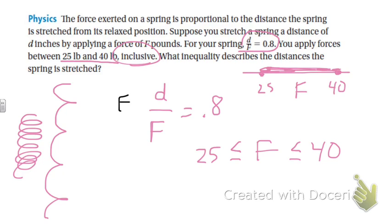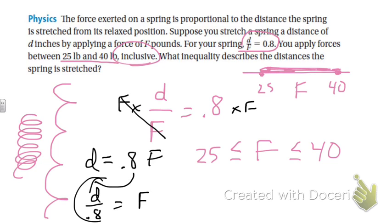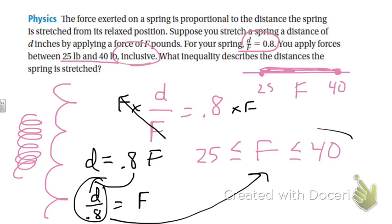You can multiply both sides by f, and you have d equals 0.8f, and then divide by 0.8, and that would give you f in terms of d, because we need to find the distances. So this actually to finish solving it would go here, but I think if you're understanding that right now, that's enough. Okay, we'll keep going.